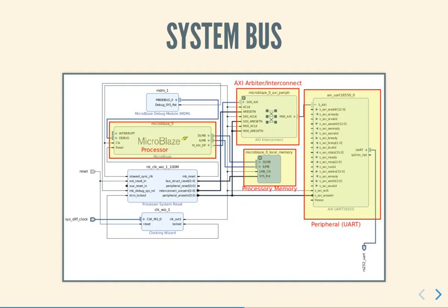Similarly, we could have a set of wires forming an address bus, another set forming a data bus — typically 32 or 64 wires grouped together. And there may be some other wires that indicate whether a read or write operation is required from the memory, whether the address is valid, whether the data to be returned is valid, and so on. The combination of these groups of wires together is sometimes called a system bus.